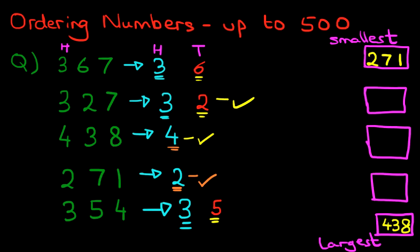So we can write this number in next. That is 327. Don't forget, the first box is already filled in with 271. So we've now got 327.